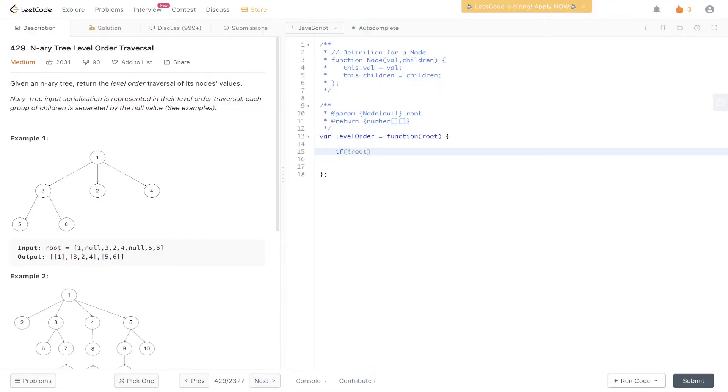First, we need to say if root is equal to null, we can return an empty array. We can initialize the queue with root. Initialize result array. And then mark queue.length so we can start the BFS. Let level equal to an empty array. And we also need to create level size, and that will be equal to queue.length.